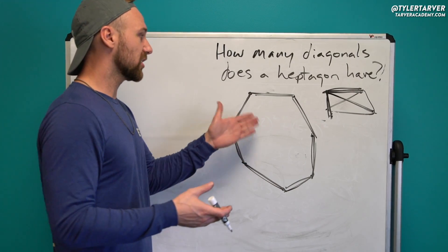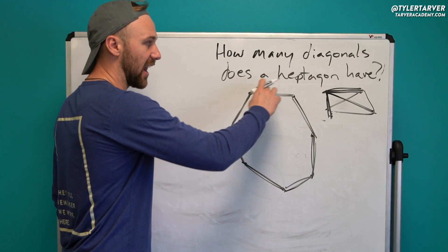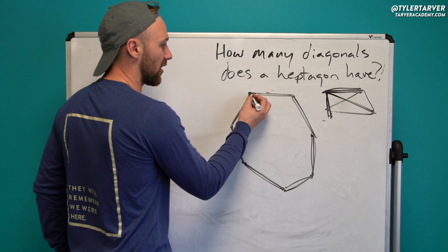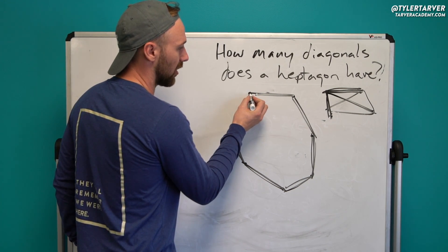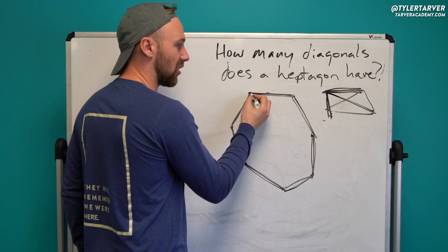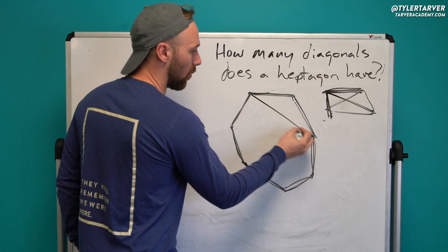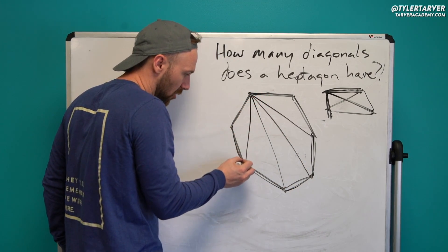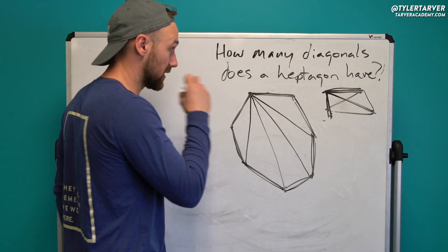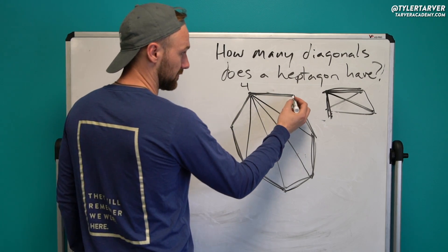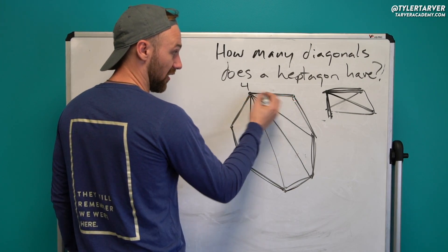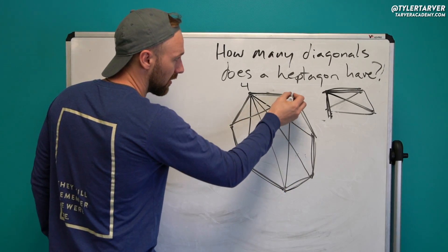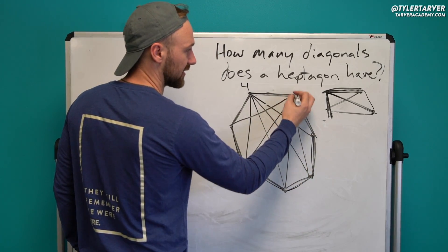Pretty much you just start at one point and start connecting all the diagonals, and you work your way all the way around because they'll overlap. So you don't want to do the same thing to everybody or you're going to get way too many diagonals. So let's start here. We can't go there because that's not a diagonal — that's on the line of the heptagon. So I'm going to go to the next one: one, two, three, four. Can't do the last one. So that's four from this vertex. Go to the next angle. Can't go there because that's a line on the heptagon. Going here: one, two, three, four. Can't go there because it's a line of the heptagon. So four there.